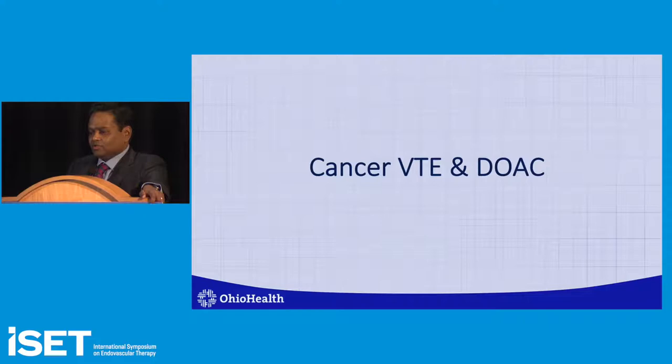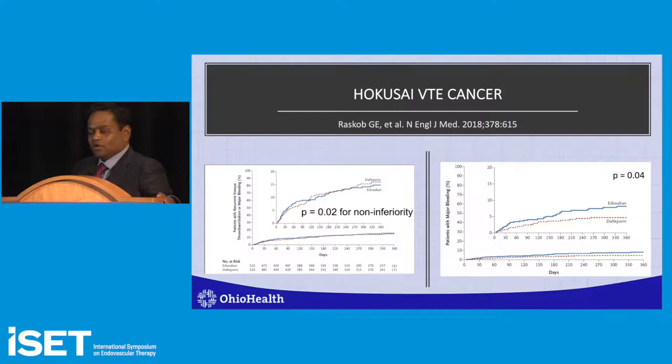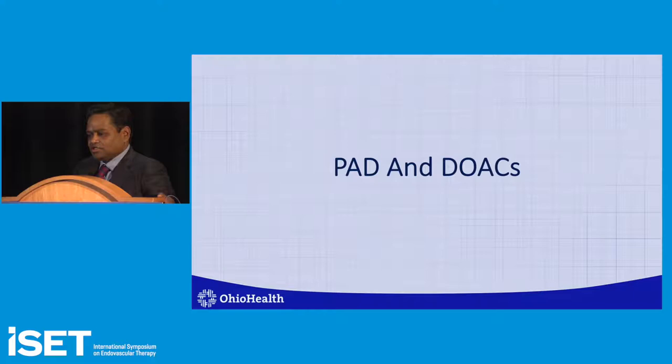Regarding cancer and VTE, three different trials are relevant: Select-D looked at rivaroxaban; ADAM-VTE had major bleeding as the primary safety endpoint compared to dalteparin; and the Hokusai study — all non-inferiority studies showing non-inferiority versus low molecular weight heparin. Based on that, edoxaban and rivaroxaban have reached 2A recommendations in ESC guidelines for long-term treatment in cancer patients.